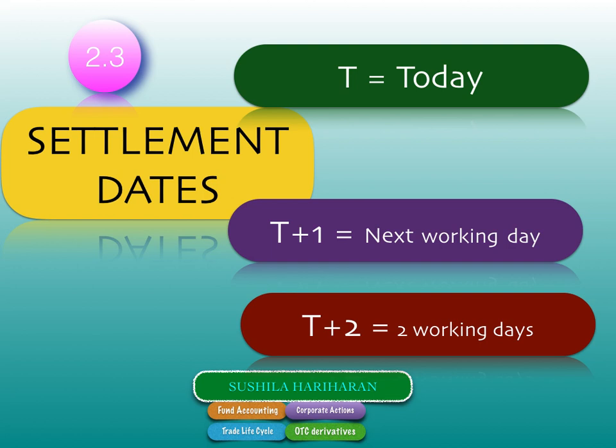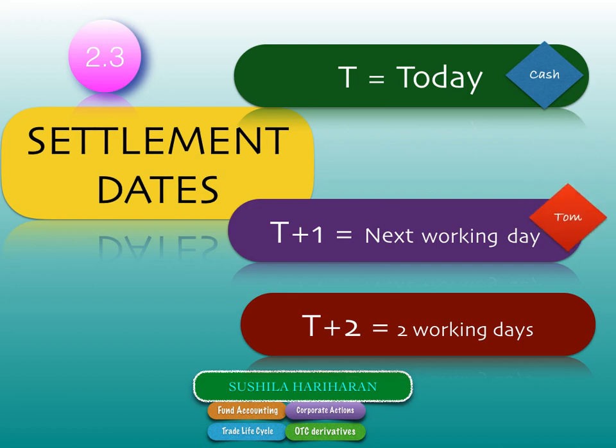If the trade settles today it is called cash settlement. If it settles the next working day it is called a Tom settlement — Tom standing for tomorrow, not any person called Tom, Dick, or Harry. If it settles on T+2, as is standard worldwide, it is a spot market settlement. So: today is cash, T+1 is Tom, and T+2 is spot.